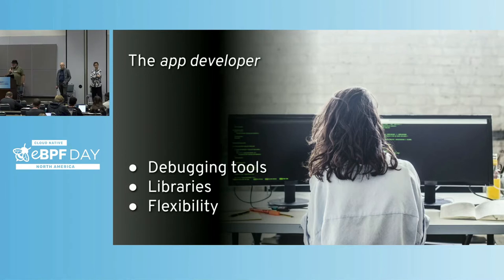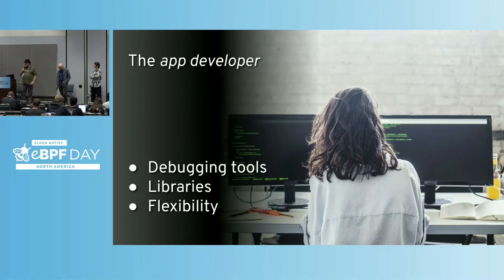Another benefit of eBPF for application developers is that they are no longer constrained to write code in user space. For example, a recent paper described making memcache available so that when a system call to memcache shows up, you can grab that system call and throw it directly to the memcache daemon — shortcutting the whole networking process entirely — making that local memcache daemon deployable alongside all applications in a container orchestration system like Kubernetes.